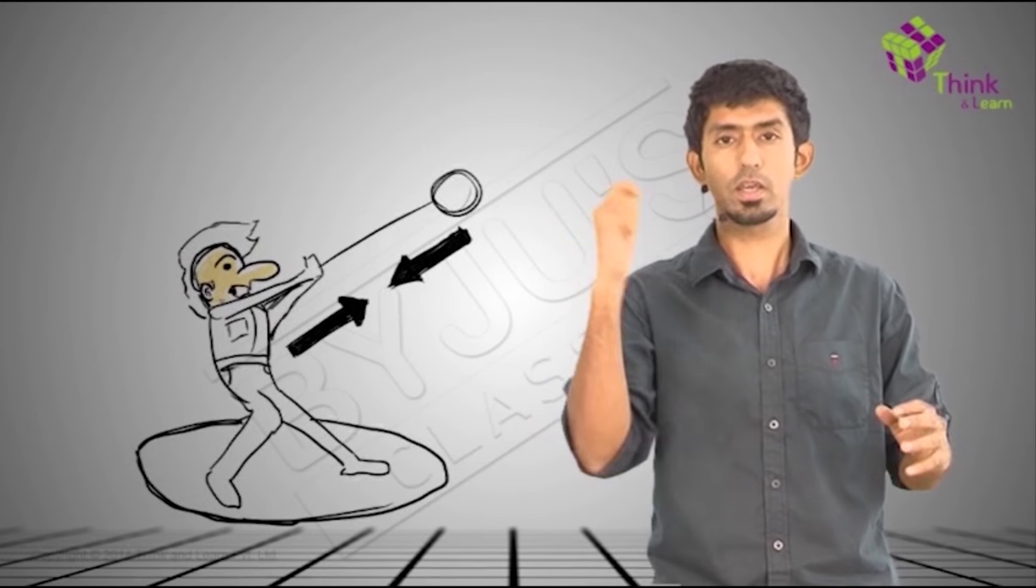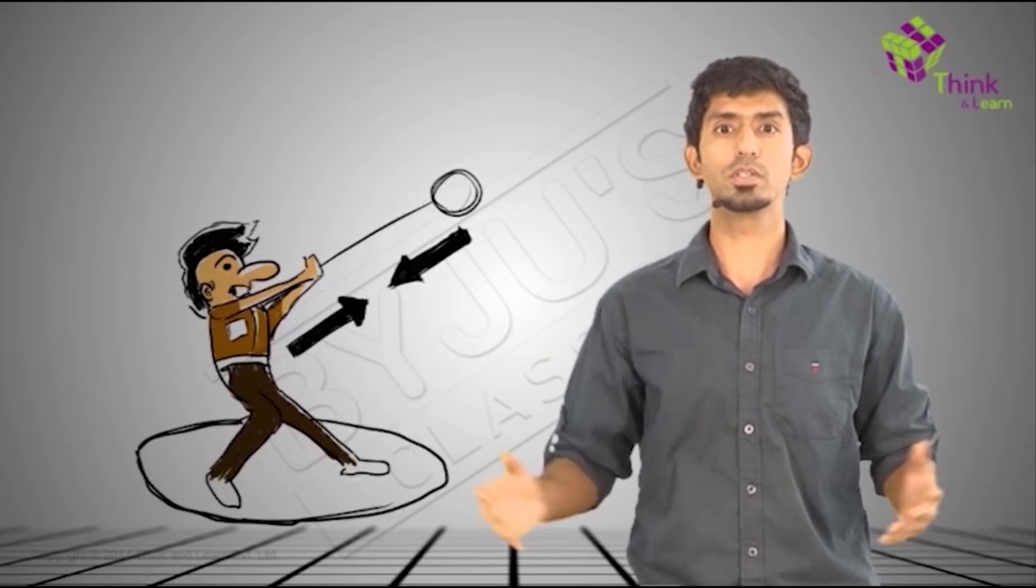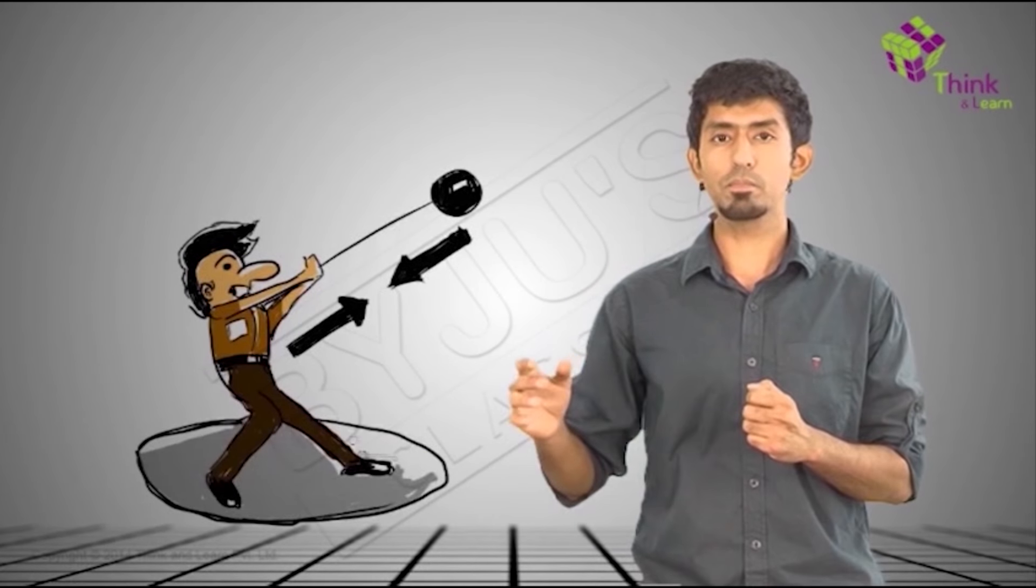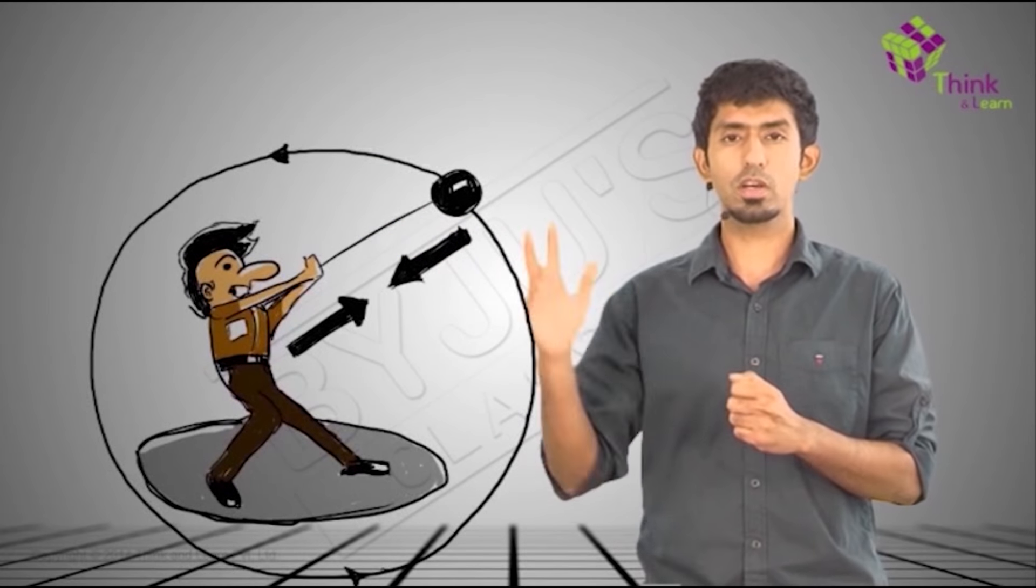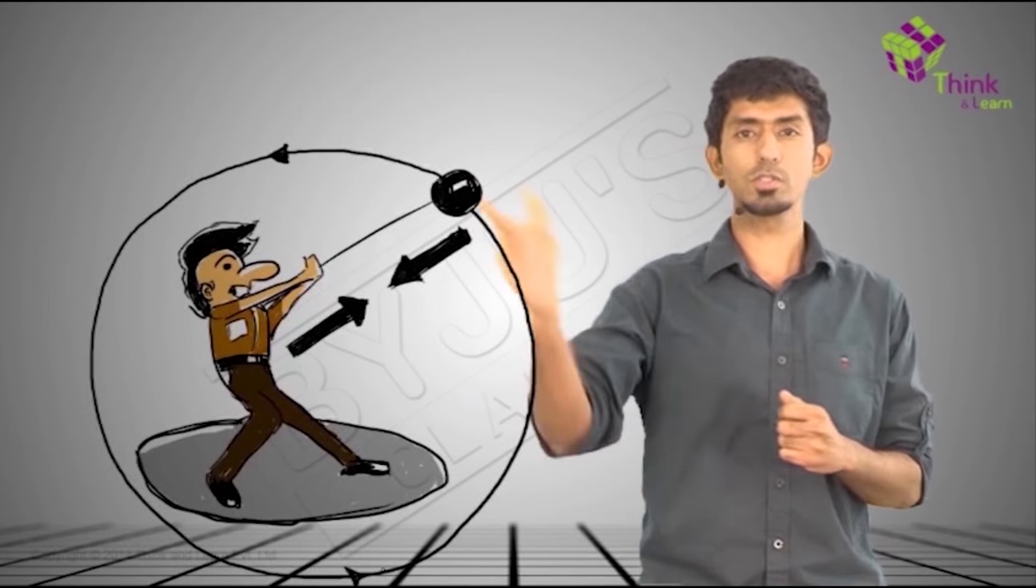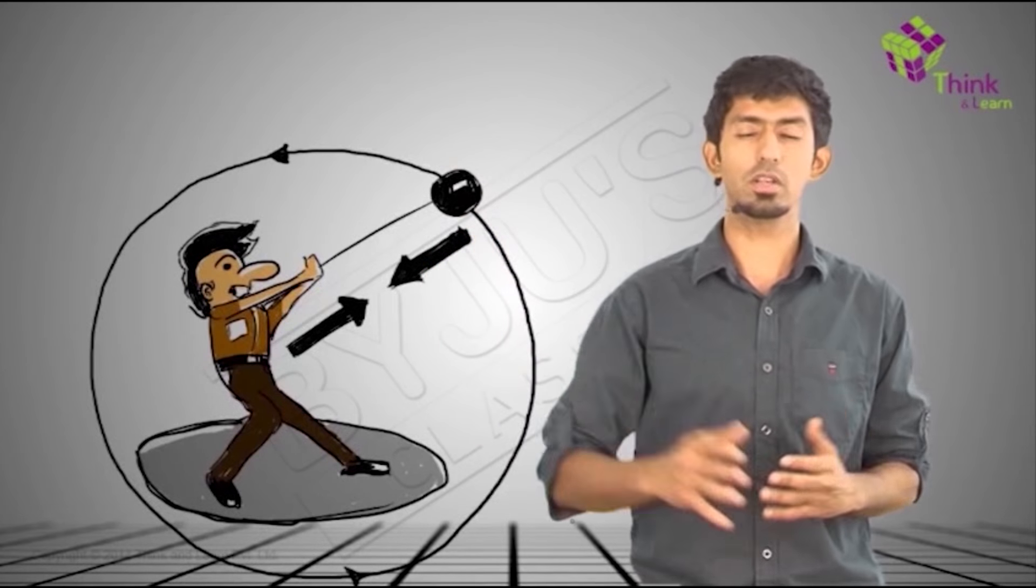So if you tie a ball to a string and start spinning it around you, what do you observe? At every point, why isn't the ball just flying away? If you had to cut the string, what would happen? The ball just begins to fly away.